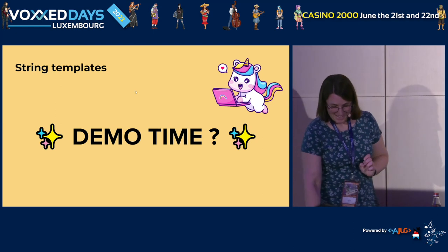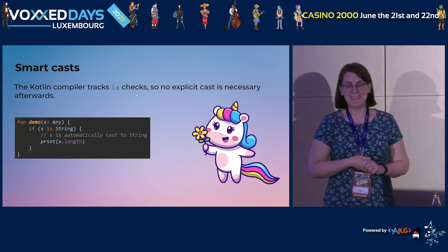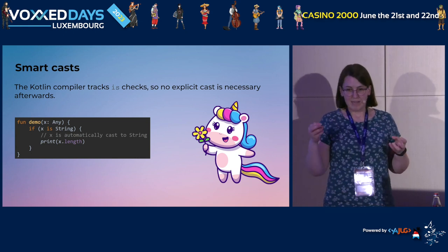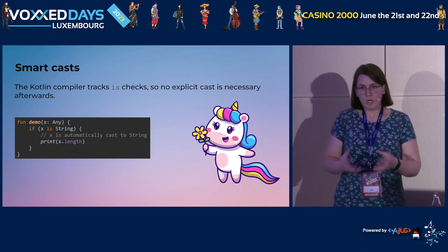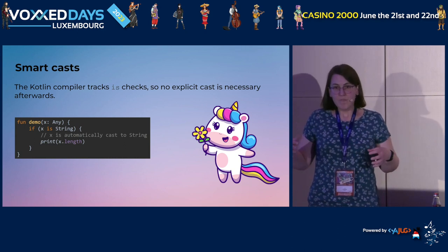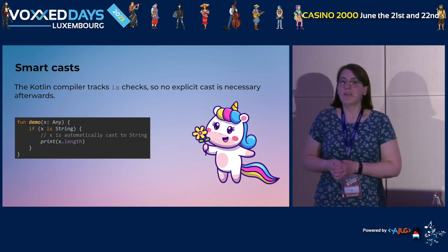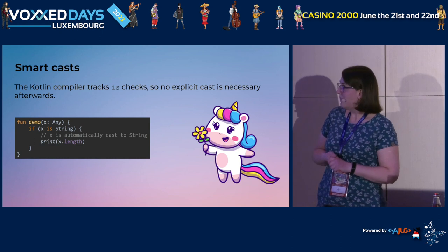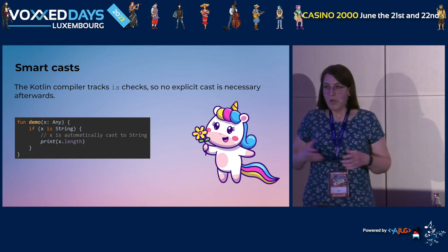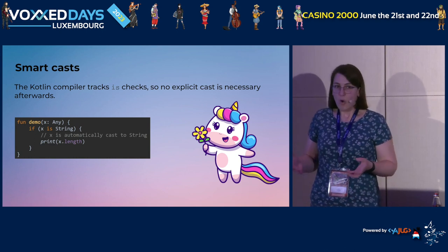Next: smart casts. In Java, after an 'instanceof' check you still have to manually cast to the class. In Kotlin, if you do such a check, Kotlin automatically knows — you checked it's a String, so you can immediately use the object as a String without any explicit cast. Let's go to the demo.